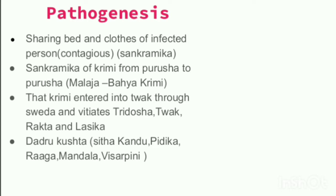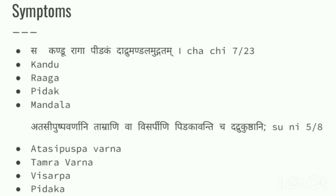The Sankramana of the Krimi from Purusha to Purusha occurs by means of Mala, meaning it can also spread through fecal matter. The Krimi enters the body through Twak via Sweda — entering through the sweat glands — and vitiates the three doshas, Twak, Rakta, and Sleshaka.